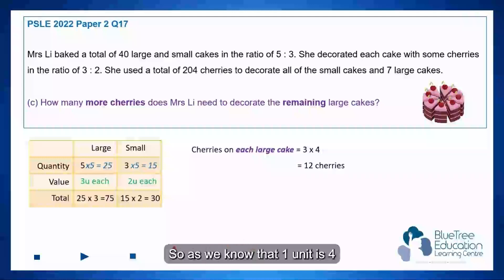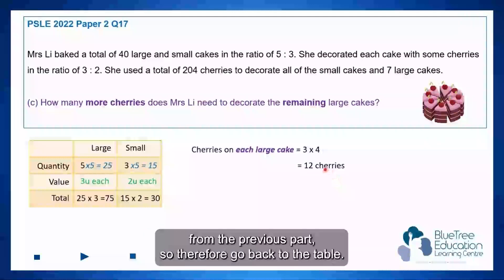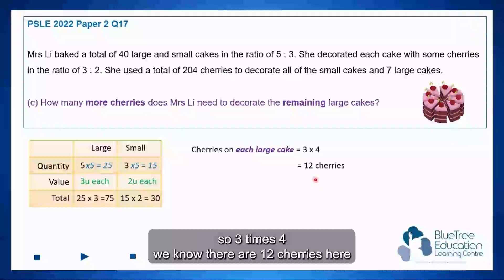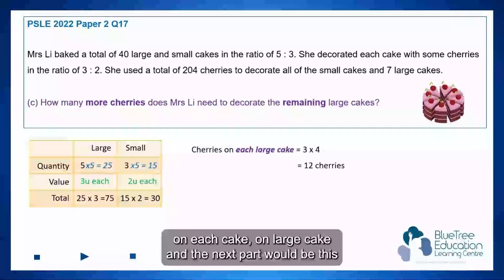So as we know that 1 unit is 4 from the previous part. So therefore, go back to the table, you can see on the large cake there are 3 units of cherries. So 3 times 4, we know there are 12 cherries here on each cake, or large cake.